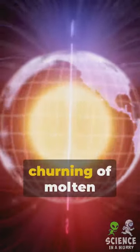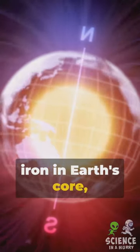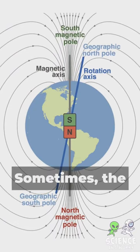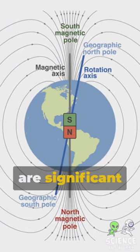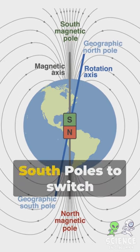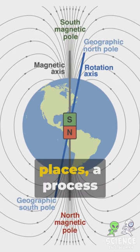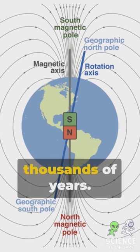Generated by the churning of molten iron in Earth's core, this field isn't constant. Sometimes the internal movements are significant enough to cause the magnetic north and south poles to switch places, a process that unfolds over thousands of years.